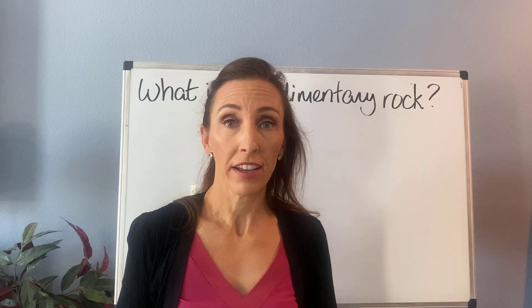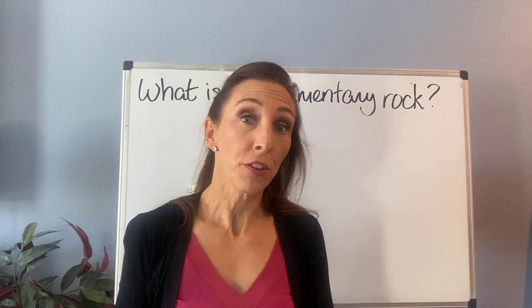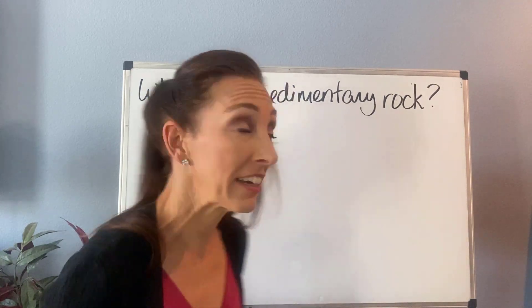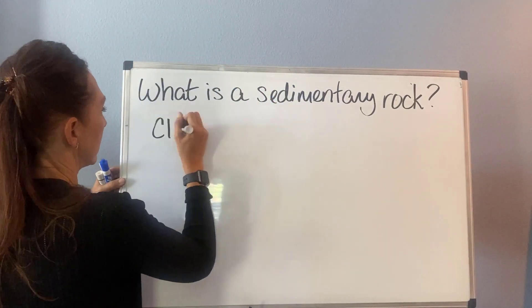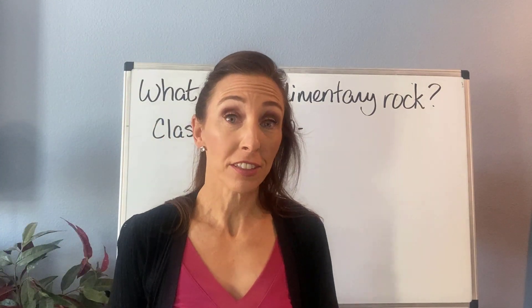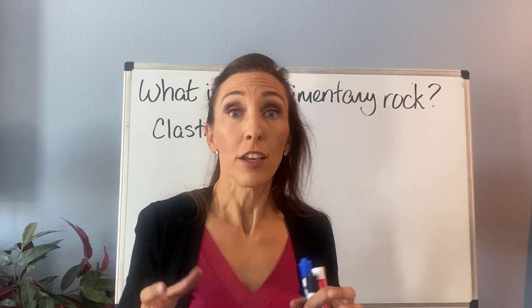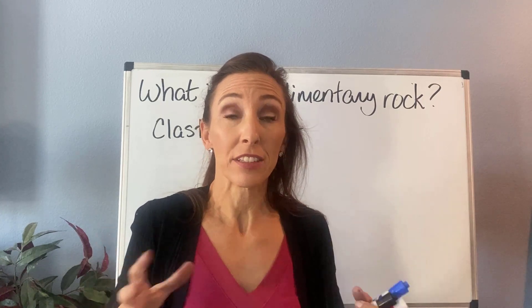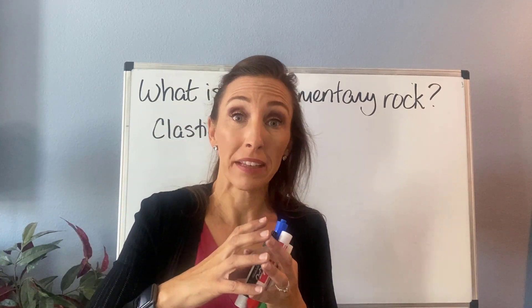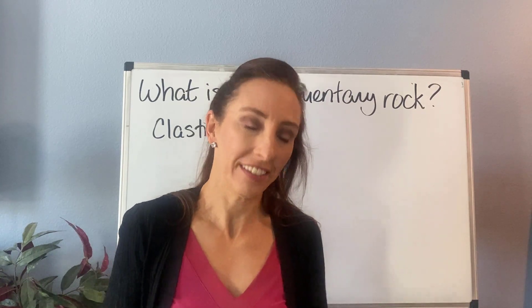To understand what a sedimentary rock is, we really have to understand the three different types. The first type is going to be called clastic or detrital. With a clastic or detrital rock, it's made up of pieces of other rocks. We have loose sediment that's going to get compacted, squished together, and cemented — kind of glued together — and that's called lithified.